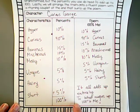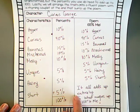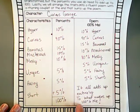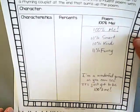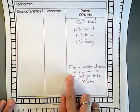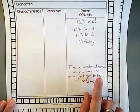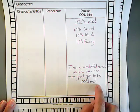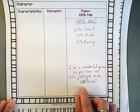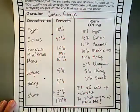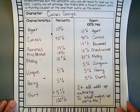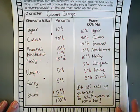Feel free to use my closing lines if you want, or make something up yourself. One example is: 'It all adds up entirely to what makes up 100% me.' Another example I've used is: 'I'm a wonderful person as you can see, it's just gotta be 100% me.' So there are two different examples — you can use one of those or make something else up, but somewhere in your poem you need to say something about a hundred percent me.